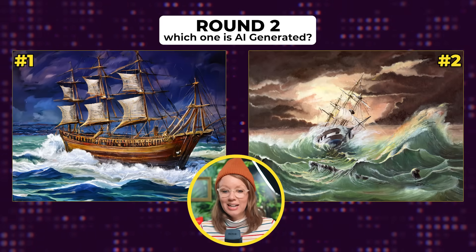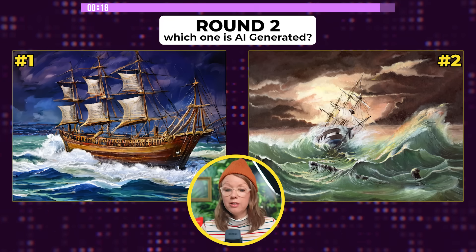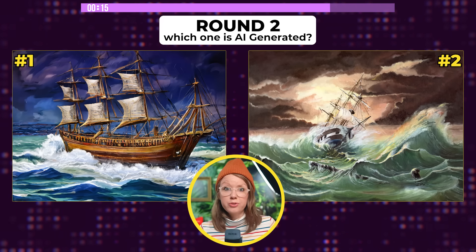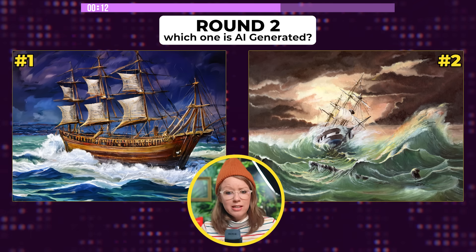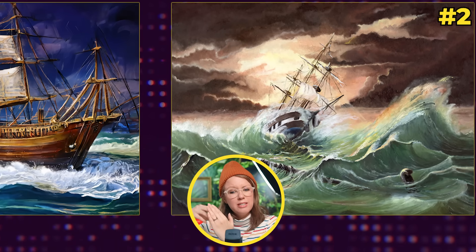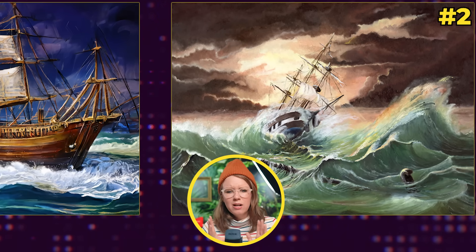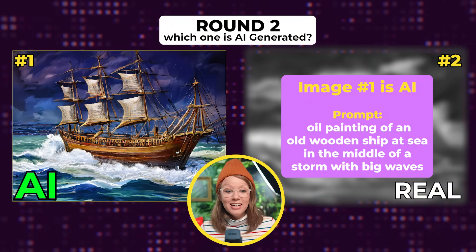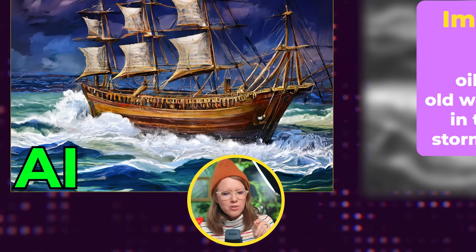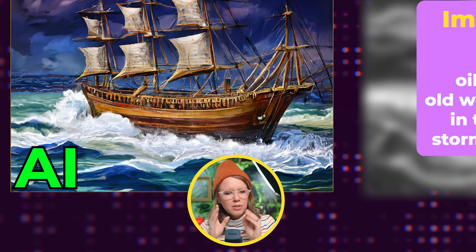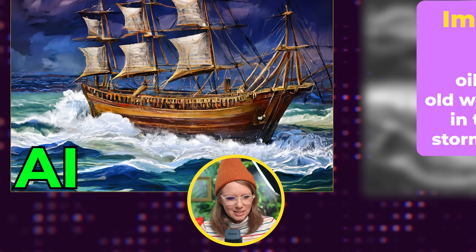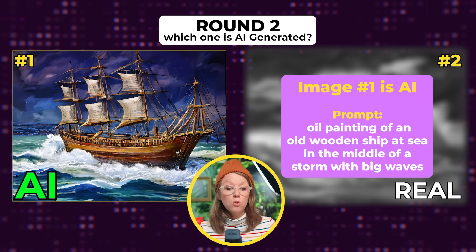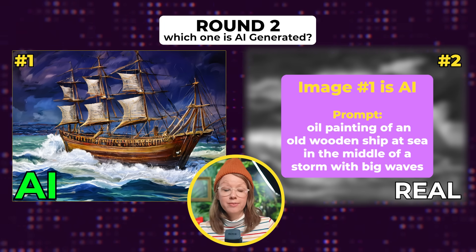Oh no, we have an illustration this time. They're both really nice illustrations. The one on the left looks almost too perfect. On the right, the ship is clearly in distress in a storm, but the angle of the sails looks different than the boat itself. For that reason, I'm going to choose image two as AI. Let's see the answer — number one is AI generated. Oh my gosh, maybe I should have gone with my gut that it looked almost too perfect. As I zoom in, you can see the little holes along the boat aren't really perfect — that's a giveaway I should have caught. Overall it fooled me. The prompt for this was: oil painting of an old wooden ship at sea in the middle of a storm with big waves. It fit the prompt.